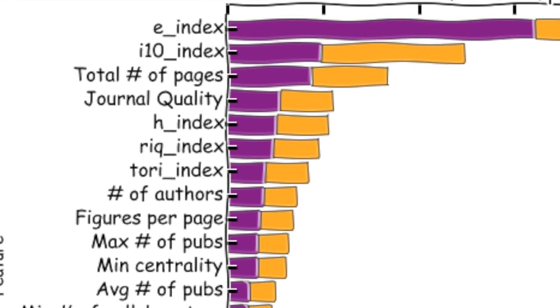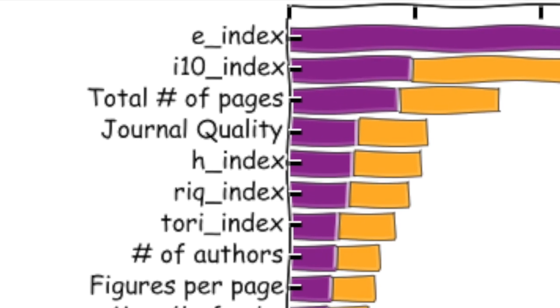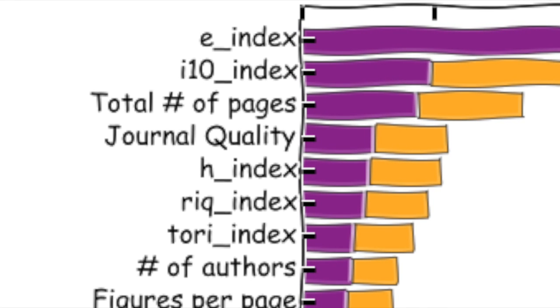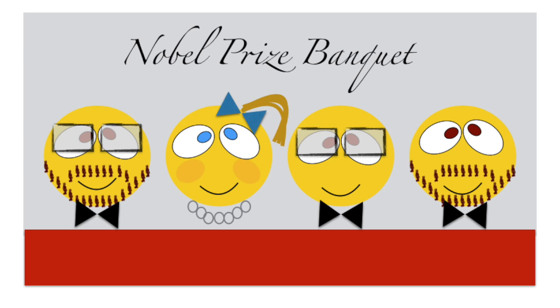In the end, you do have to write good science. It turns out that the most predictive features have to do with the author's past success. You have to be famous in order to get famous, it seems.